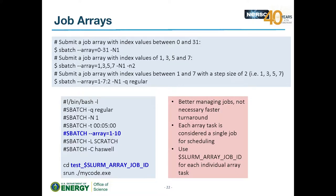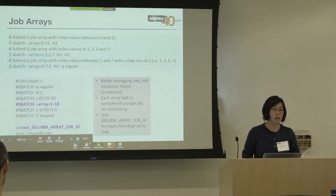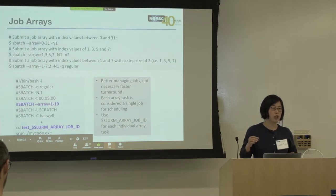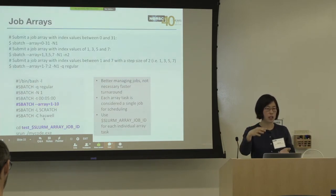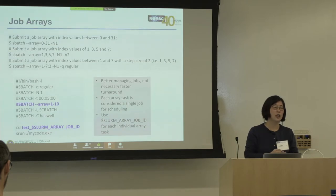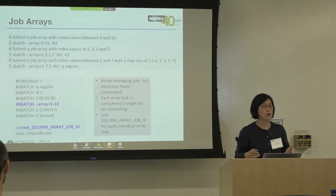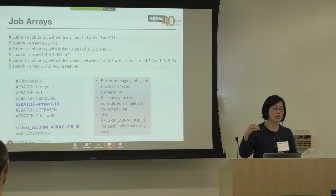Job arrays let you manage many similar jobs using the SLURM_ARRAY_JOB_ID parameter. You specify the array count (e.g., 10 jobs), and each job does something based on that ID. Monitoring shows job IDs like jobID_1, jobID_2, etc. — these are individual jobs scheduled independently whenever resources are available. They are subject to submission and queue limits just like individual jobs.